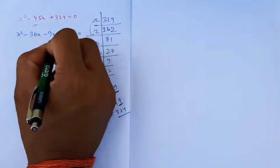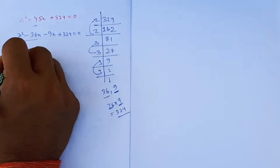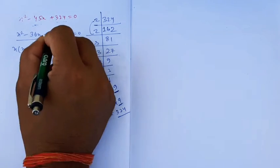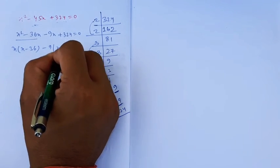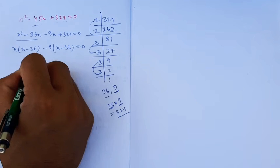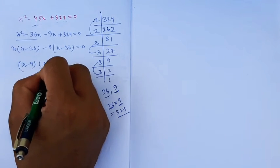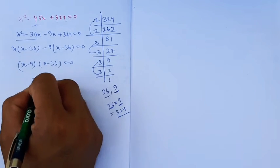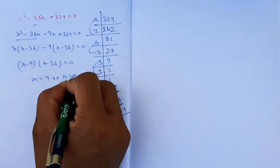This gives us x(x - 36) - 9(x - 36) = 0, which factors to (x - 9)(x - 36) = 0, so x = 9 or x = 36.